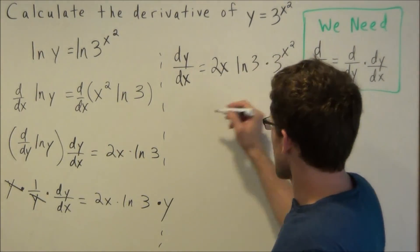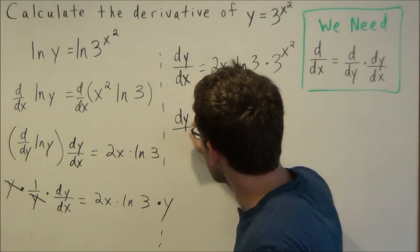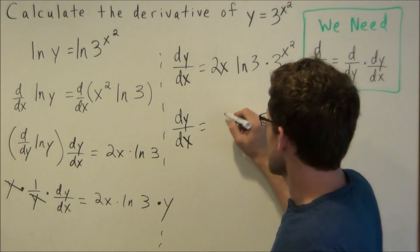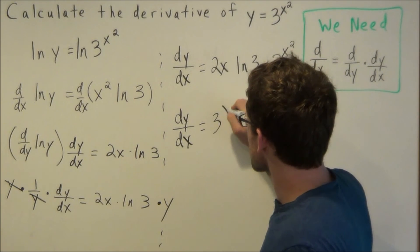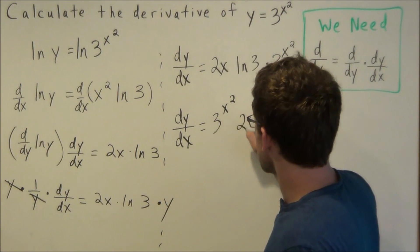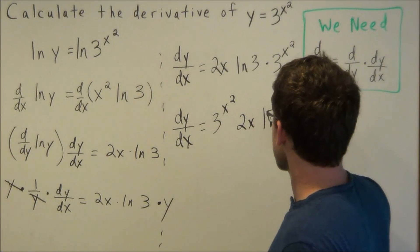So if we want to rewrite our answer, we could say our final answer is 3 to the x squared, 2x natural log of 3.